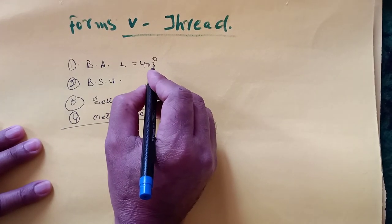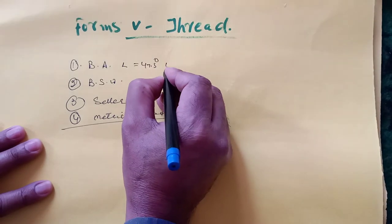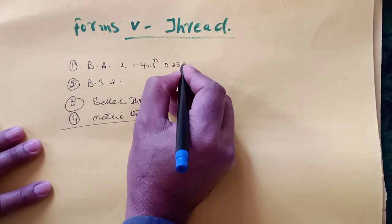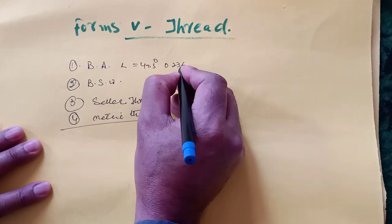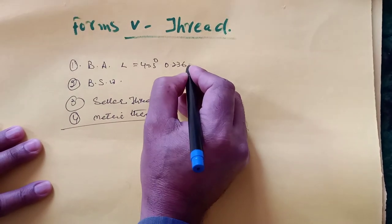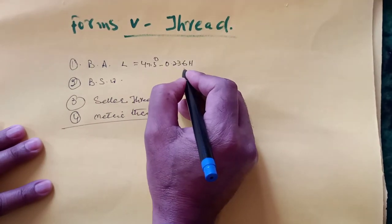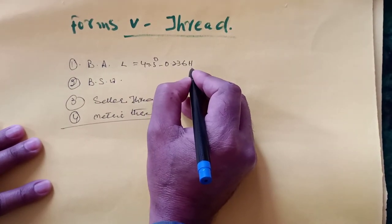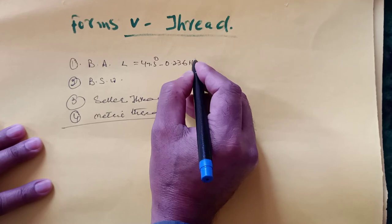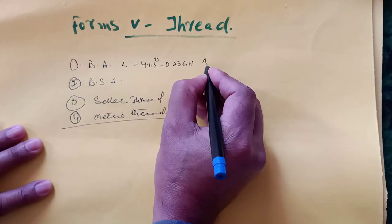The depth is 0.236H, where 0.236 of H, 0.236 of depth, is rounded at crest and at root.